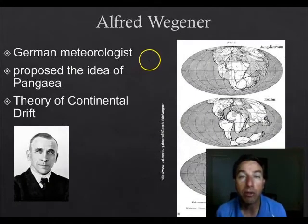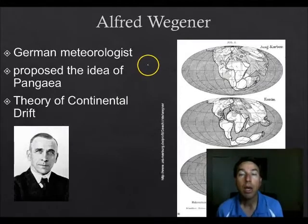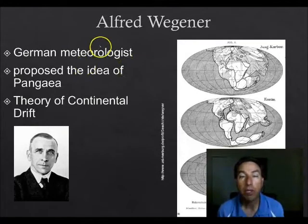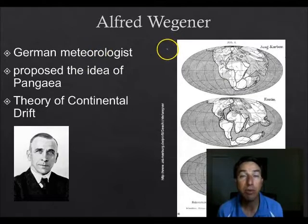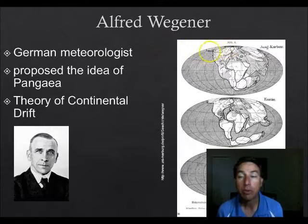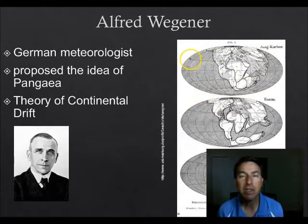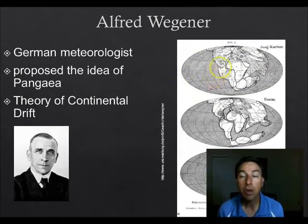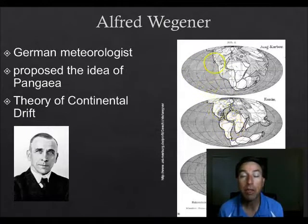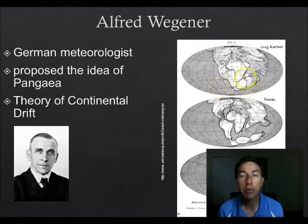Let's talk about the theory of continental drift. Alfred Wegener was a German meteorologist and the first to propose the idea that the continents had moved around. He drew maps showing how the continents used to fit together, based on the puzzle-piece-like appearance of the planet. He said that over long periods of time the continents broke apart into several pieces, and he called the original large landmass Pangea.